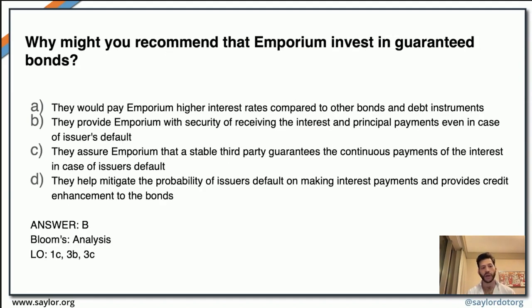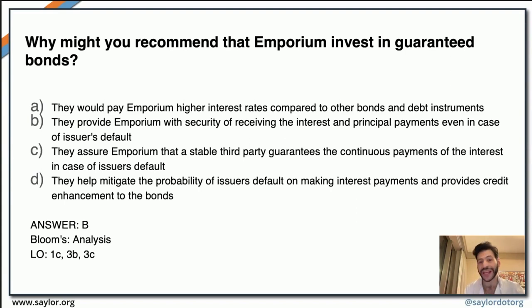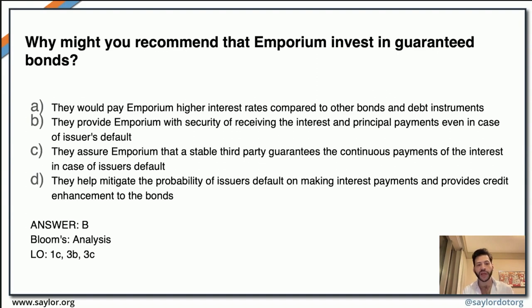The next question asks why you might recommend Emporium invest in guaranteed bonds. This tests knowledge of guaranteed bonds and how they work. Answer B is the most accurate answer: guaranteed bonds provide Emporium with security that interest and principal payments will be made by a third party should the issuer default.